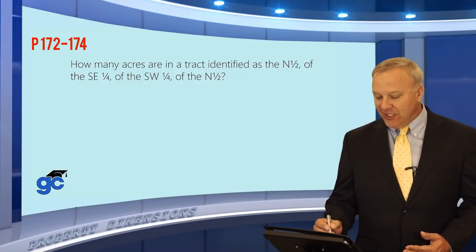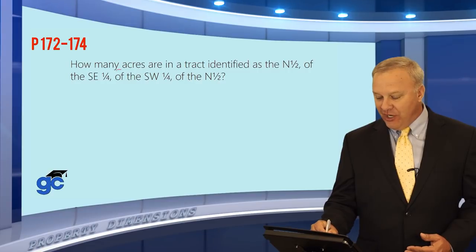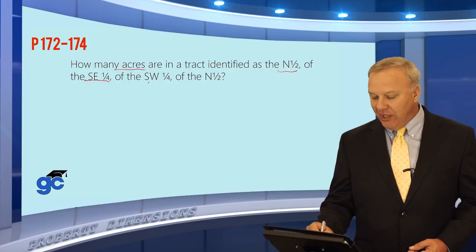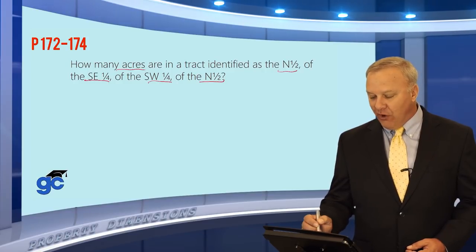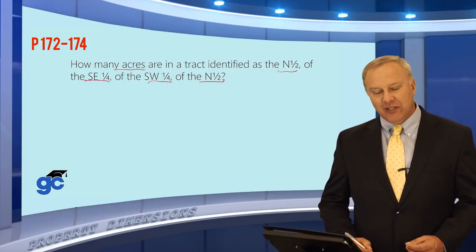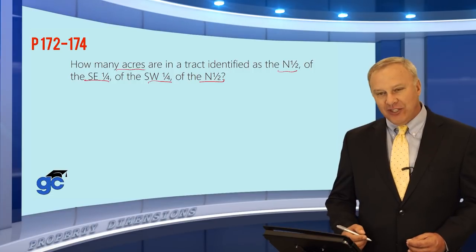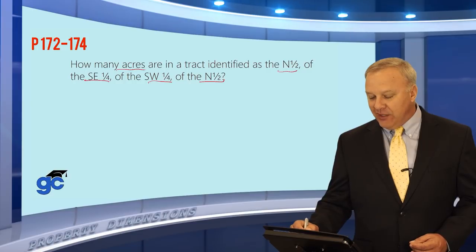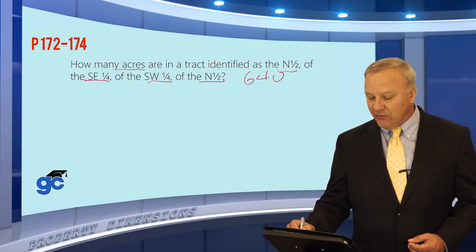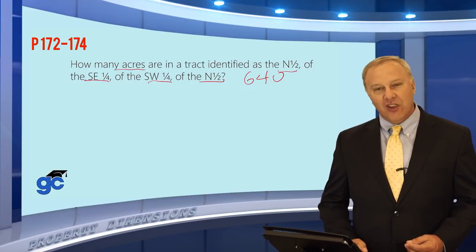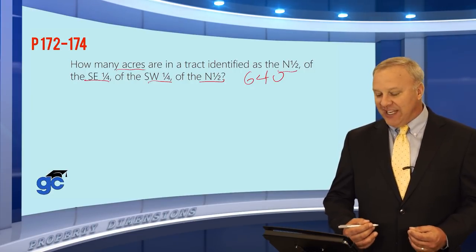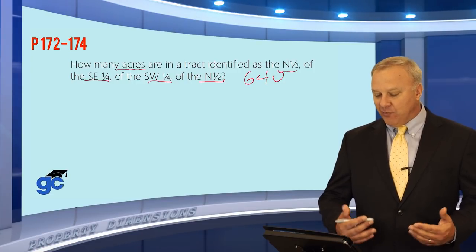The question says: how many acres are in a tract identified as the north half of the southeast quarter of the southwest quarter of the north half? Now, there's a little bit that's missing from this. Anytime you see a question like this, you have to remember that they're always talking about a section, and in every case, a section is 640 acres.